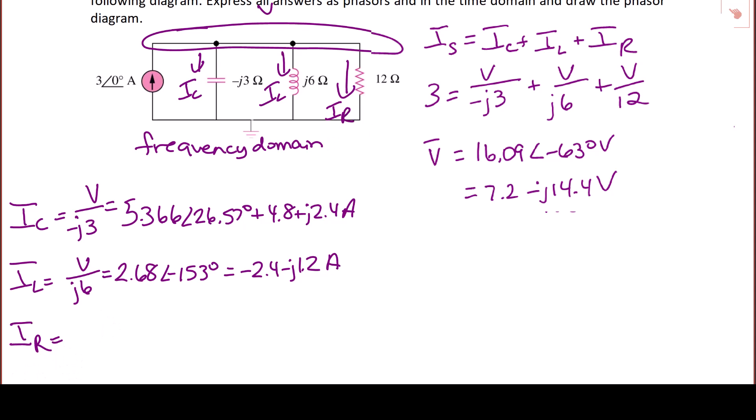And the current through the resistor is V over 12. So V over 12 is going to yield 1.34 with an angle of negative 63.43 degrees, or in rectangular form, we can write that as 0.6 minus J 1.2 amps.